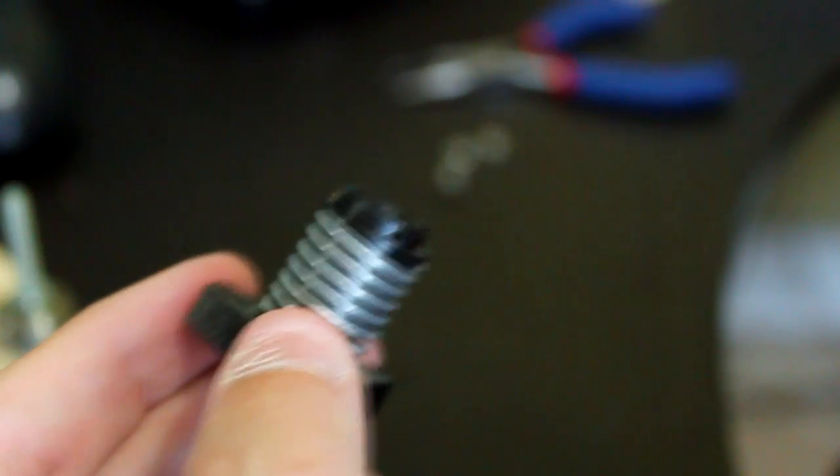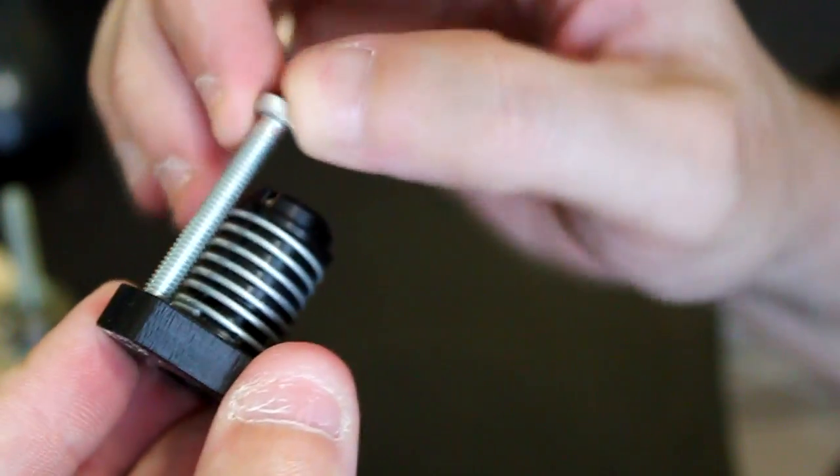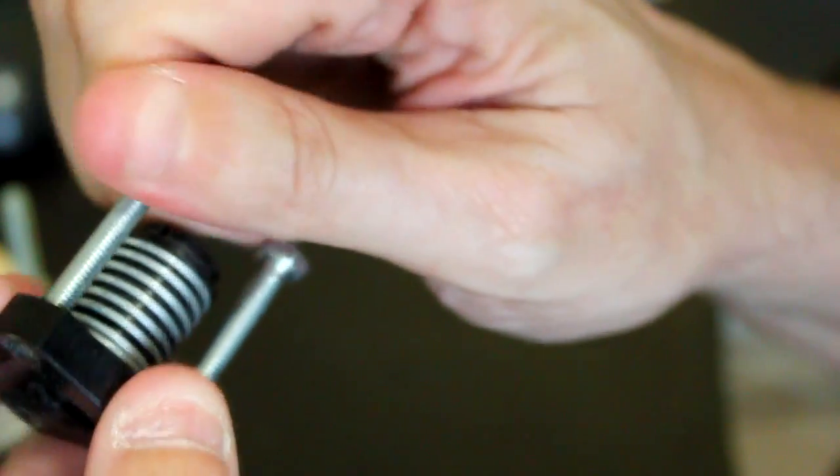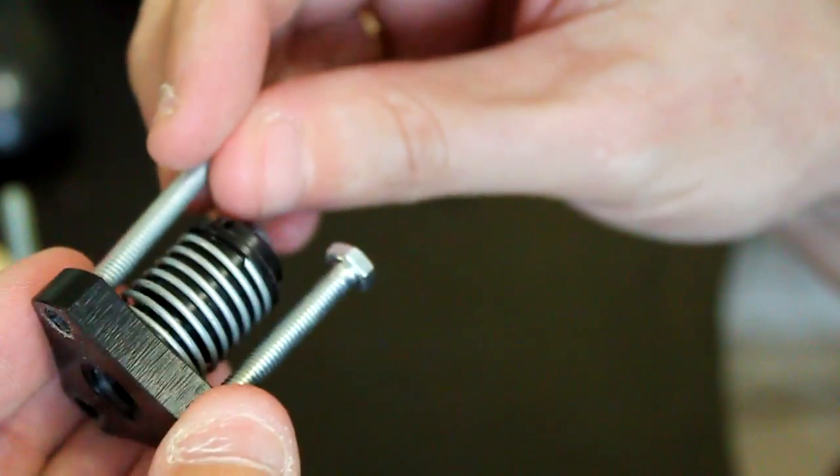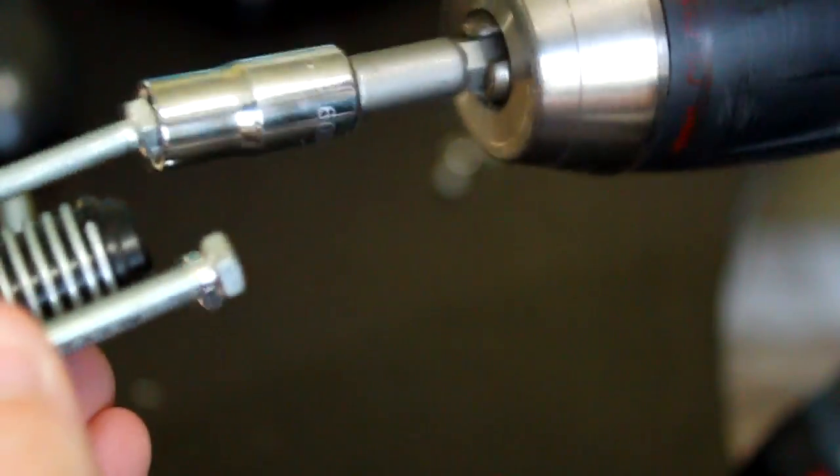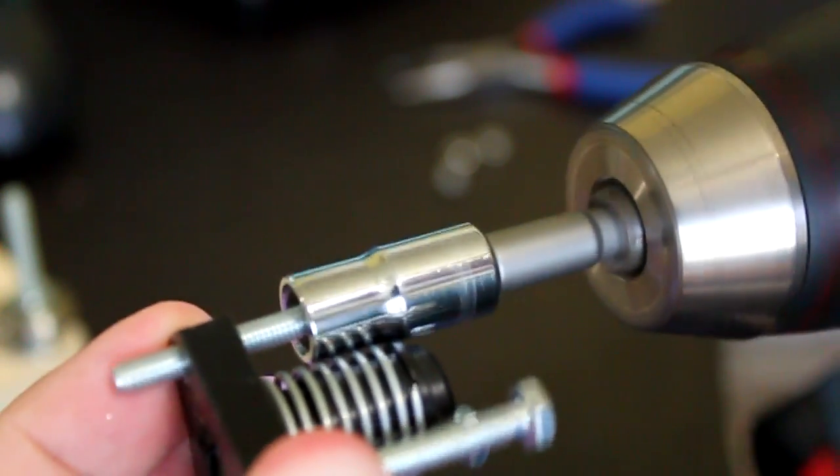To prepare the anti-backlash nut for mounting, use three number 6 screws measuring at least 1 1⁄4 inches in length. Number 6 screws will be a loose fit as compared to the screws shown in this video as these are M4 screws.